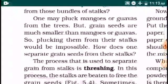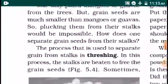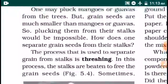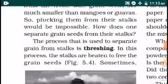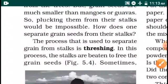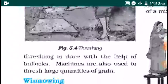How does one separate grain seeds from their stalks? The process used to separate grains from the stalk is called Threshing. In this process, the stalks are beaten to free the grain seeds. Threshing is done with the help of machines as well. Machines are also used to thresh large quantities of grains. The seeds are obtained separately — this process is called Threshing.